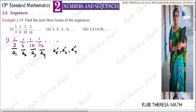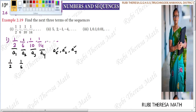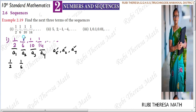A sequence is nothing but a list of numbers that follow an order. One number follows a pattern, and we need to identify what pattern is being followed in order to find the next 3 terms. Looking at 1/2 and 1/6 — first term and second term — the numerator is always 1, so we consider the denominator. The difference between 2 and 6 is four.